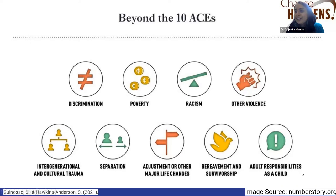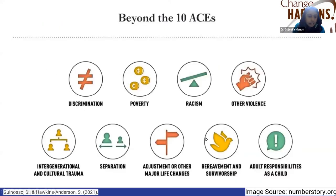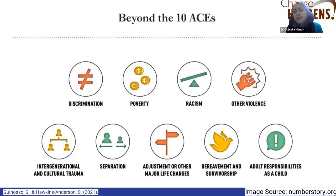Intergenerational trauma is another area we often miss. We tend to see youth instead of seeing them as part of a larger family and social context. Looking at intergenerational and cultural history — the suffering and experiences passed through different generations — is something we should start examining. Some of us are familiar with genograms, like doing family maps, just seeing where our youth come from, what stressors are carried through generations from their parents and grandparents, including cultural things shared across generations.